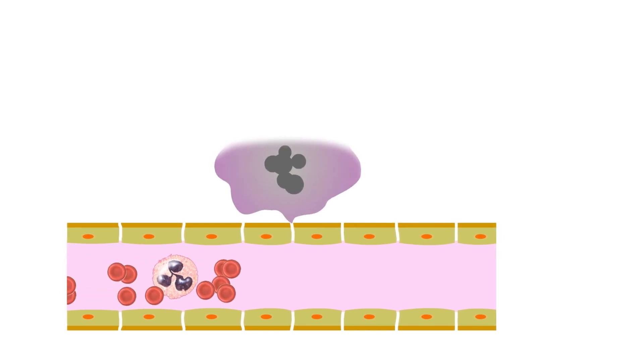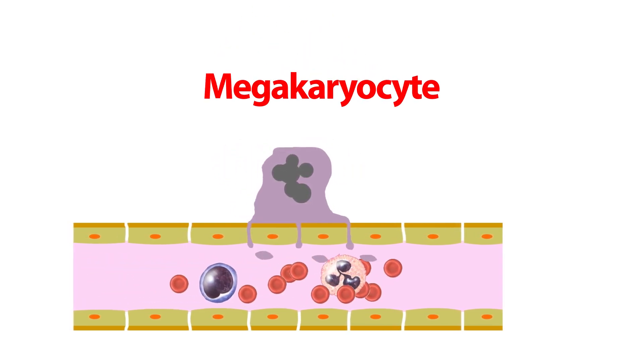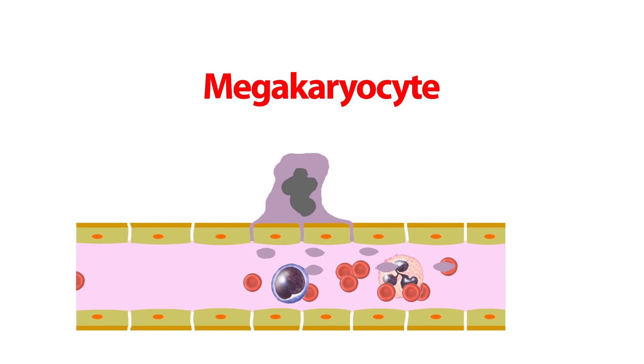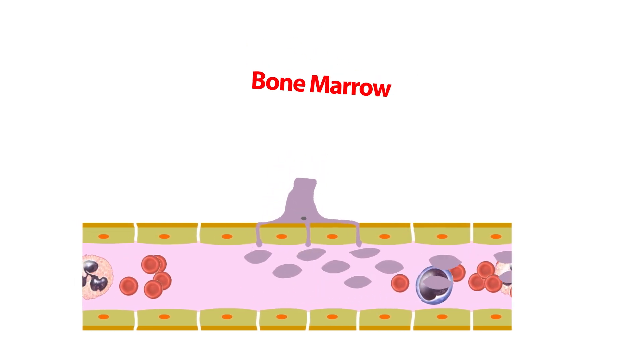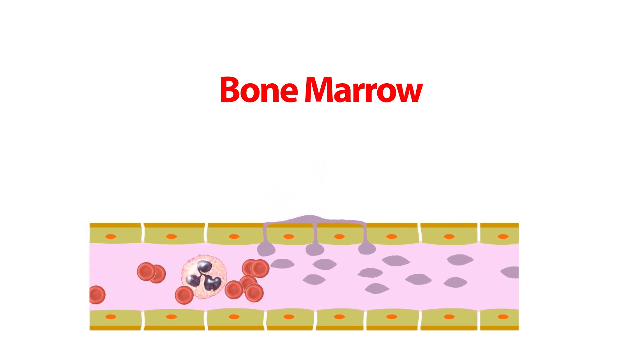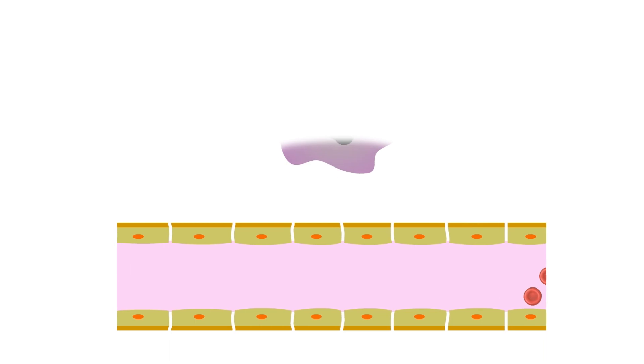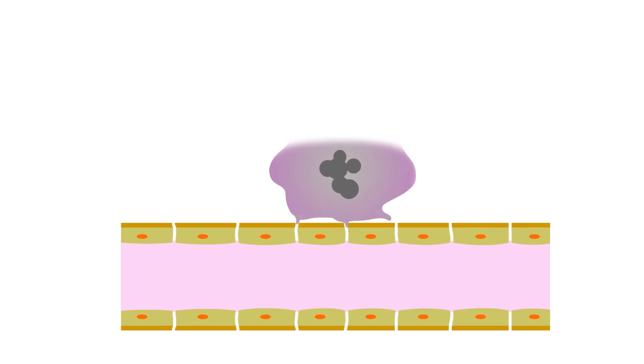Platelets are not actually cells. Rather, they are fragments of a larger cell called a megakaryocyte. Megakaryocytes are produced in the bone marrow. After their production in the bone marrow, these megakaryocytes converge towards the circulatory system, but due to their larger sizes, they cannot directly cross the endothelial gaps.